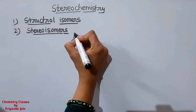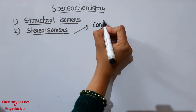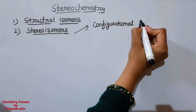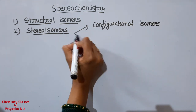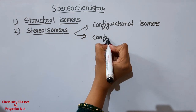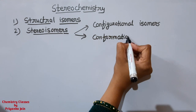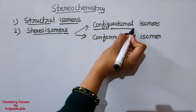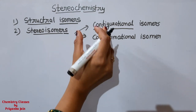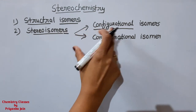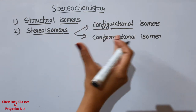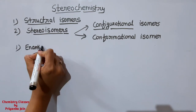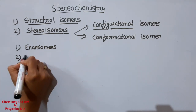Stereoisomers may be of two types: one is configurational isomers and the other is conformational isomers. Configurational isomers are when two molecules have the same formula and same bonding but different configurations. They may be of two types: enantiomers and diastereomers.